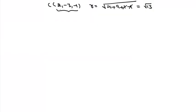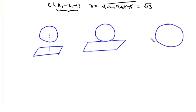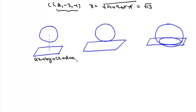Next we have questions on a sphere and a plane. If we are given a sphere and a plane, then we have three possibilities: either the sphere and plane do not intersect, or the plane touches the sphere at one point, or the sphere and plane intersect to form a circle.